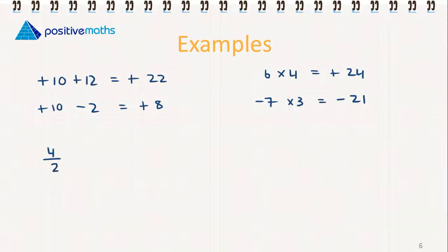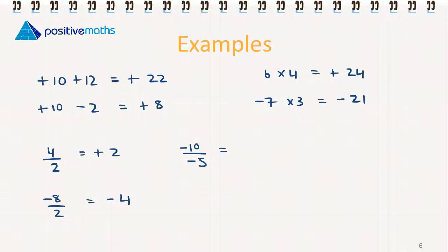For division: 4 divided by 2 — both plus signs, so we get a plus; dividing gives us 2. Minus 8 divided by 2 — different signs gives us a minus; dividing gives us minus 4. Minus 10 divided by minus 5 — same signs again, so like signs give us a plus; 10 divided by 5 gives us 2. Plus 2 divided by minus 4 — different signs gives us a minus; 2 divided by 4 simplifies to one half, so our answer is minus one half, or minus 0.5.